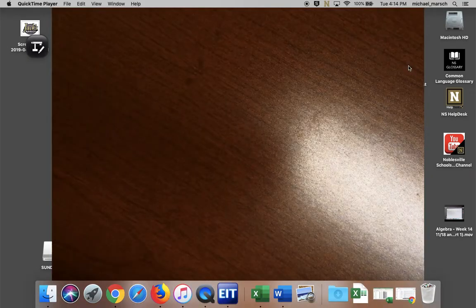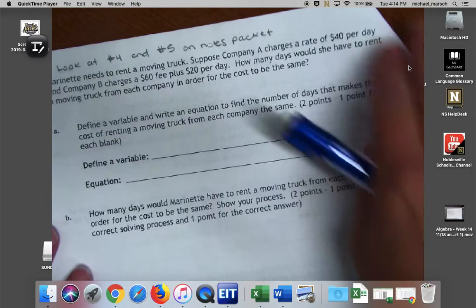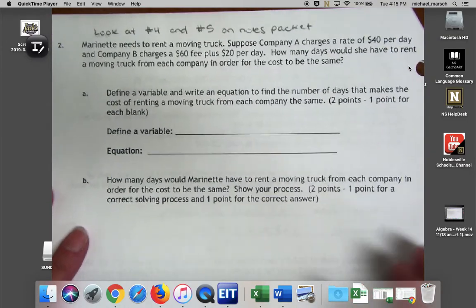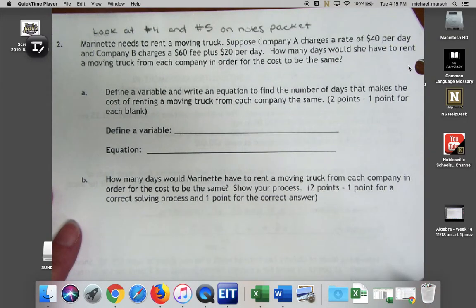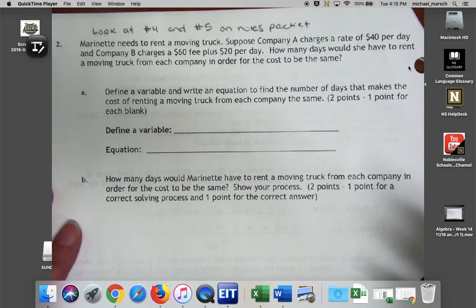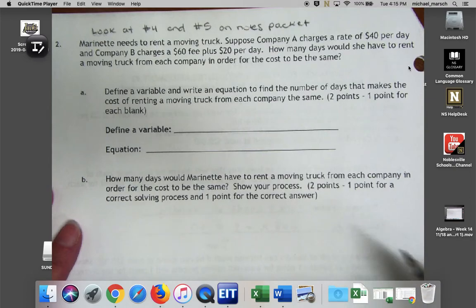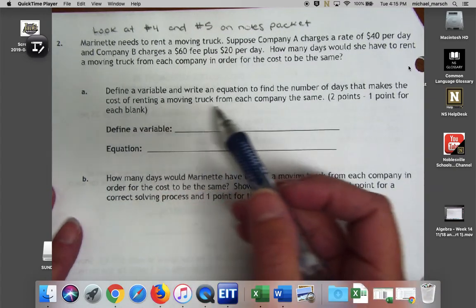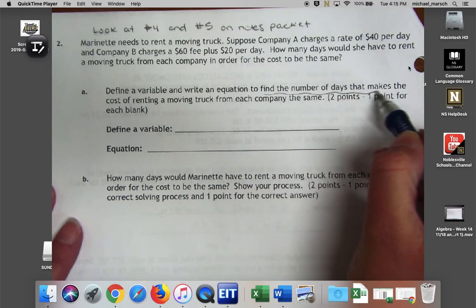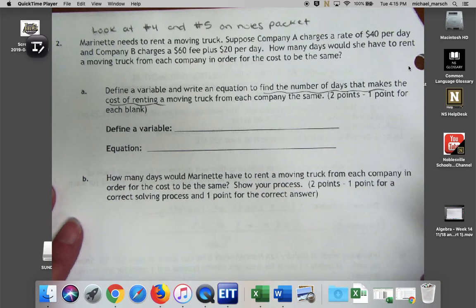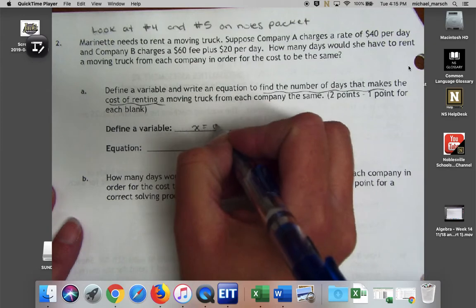Okay, let's go on to question two. We've got Marionette. She needs to rent a moving truck. She's got two companies that have different pricing. So how many days would she have to rent the moving truck from each company in order for the cost to be the same? To find a variable, find the number of days that makes the cost of renting a truck the same. So x is going to be the number of days.